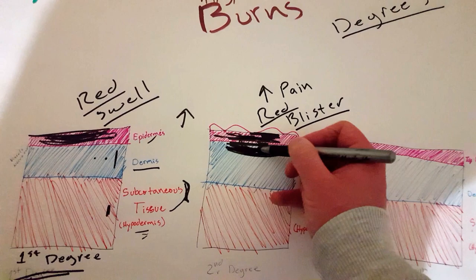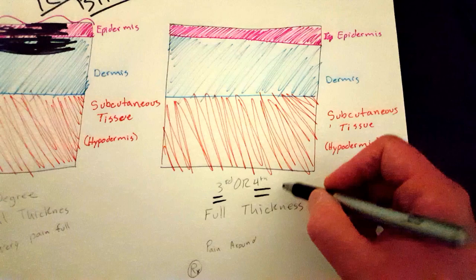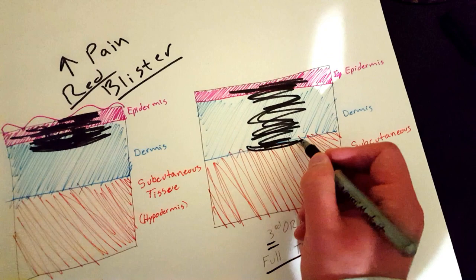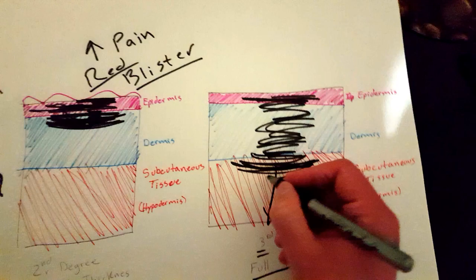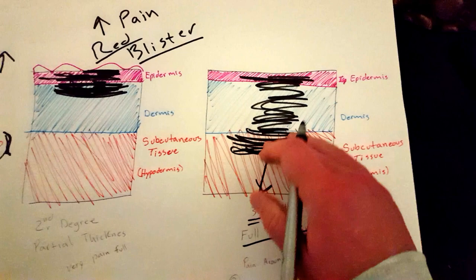Now with a third-degree burn or even fourth - I'll tell you what the difference is between these two - also equals full thickness. We have the top two layers damaged all the way down to the third layer. If it's partially damaged down to the muscle or just the fatty tissue, we call it a third-degree burn. If it's damaged all the way to the bone, we call it a fourth-degree burn. That's the difference - did it get down to the bone or not.